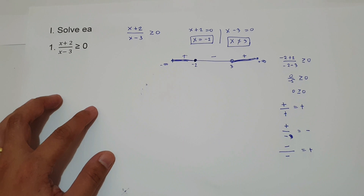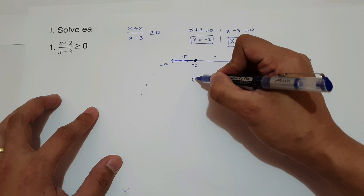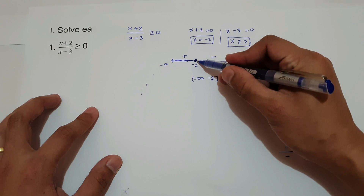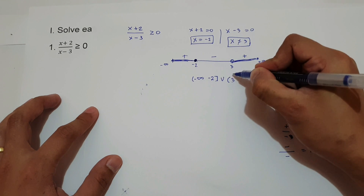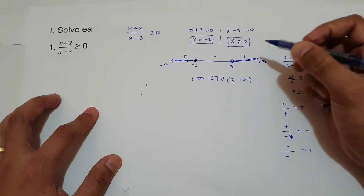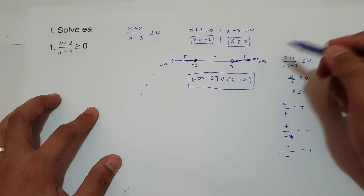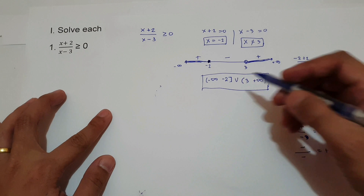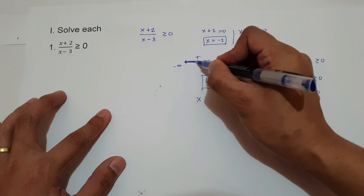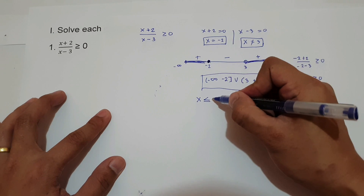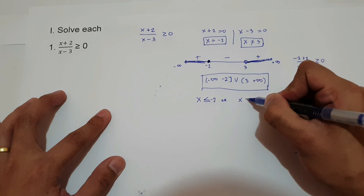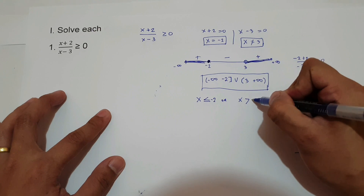Now, how do we write the interval notation using this graph? We have negative infinity up to negative 2 with a bracket, because of the closed circle. Union with open parenthesis 3 up to positive infinity, because of the open circle. For inequality notation: x less than or equal to negative 2, because of the closed circle and direction to the left, or x greater than 3, with no equal sign because of the open circle.